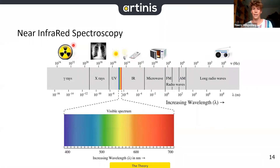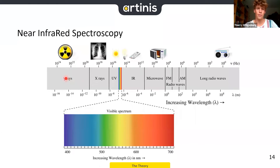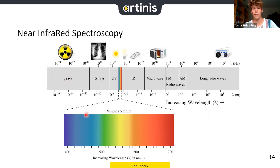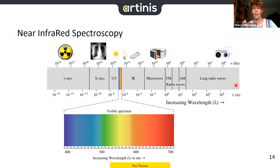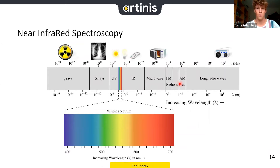As the name near-infrared light already suggests, we use light in this region — near-infrared. As humans, we're actually a bit limited; we can only see 400 up to 700 nanometers, whereas the whole spectrum goes from nuclear waves all the way to long radio waves. The infrared region is just above this visible spectrum, around 800 up to 1000 nanometers.